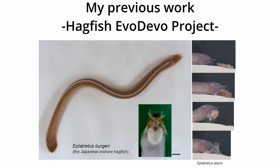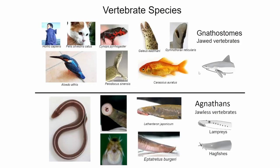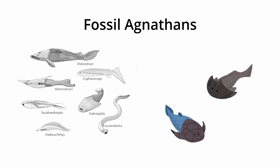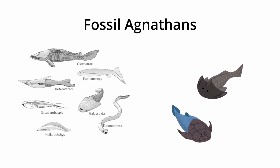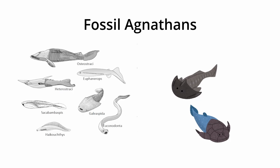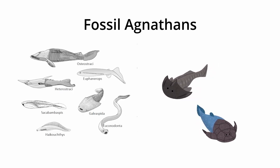This is my postdoc project. Before I came to Taiwan, I did this work — the hagfish evo-devo project. The hagfish is a jawless vertebrate. I will show you this picture: what is different is that living jawless vertebrates are lamprey and hagfish, and their morphological features obviously differ. The mouth is different.